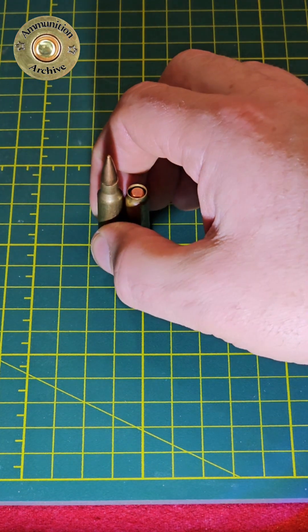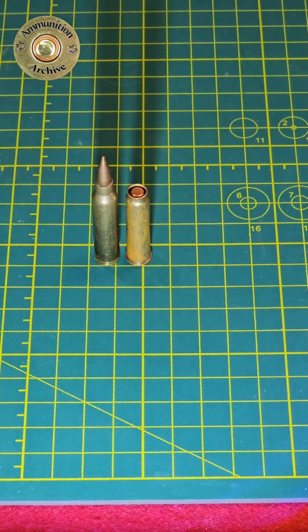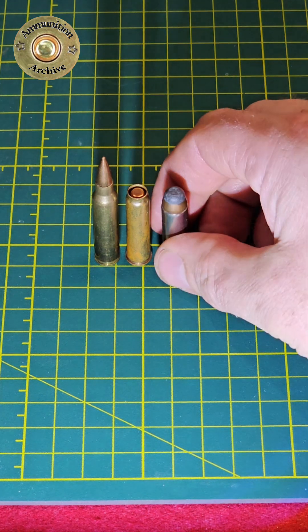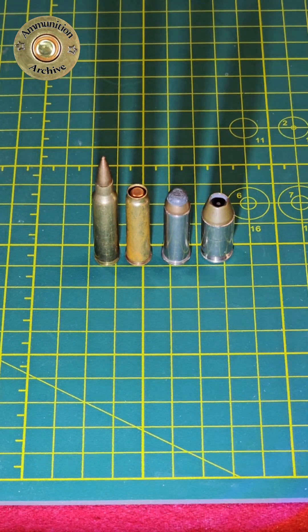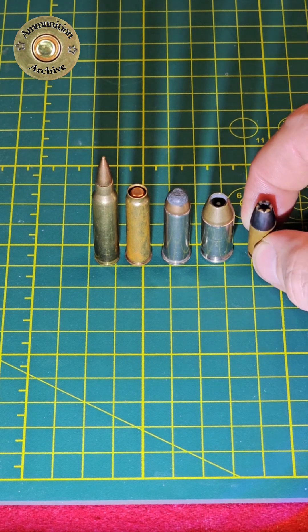Now, here it is beside a .223, a .38 Special, a .45 Auto, and a 9mm Luger.